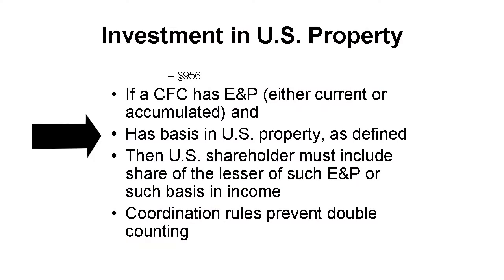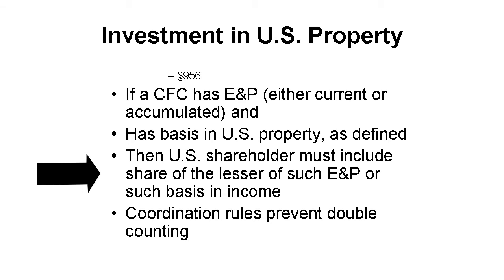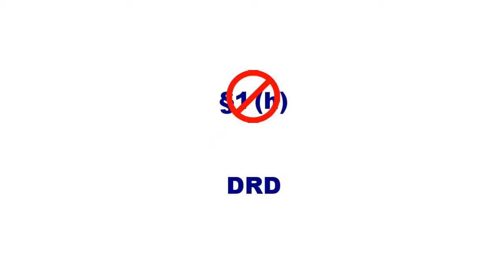Ownership includes direct ownership and ownership by attribution. Finally, the CFC must have an interest in U.S. property that gives rise to basis. This can be ownership of the property or of other interests. When such basis and E&P exist, the U.S. shareholder must include an amount in his, her, or its income as if it were distributed by the foreign corporation to that U.S. shareholder directly. This inclusion is not a dividend — it is just an inclusion, not subject to any lower rate of tax or exclusion from income related to dividends.